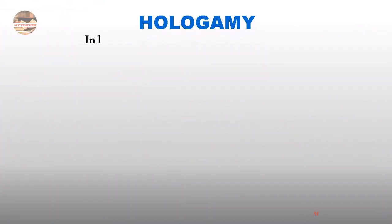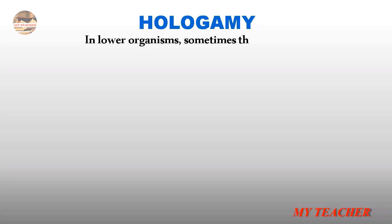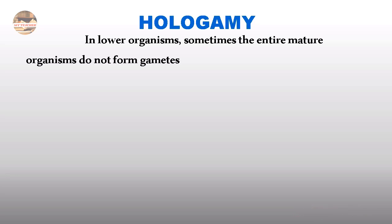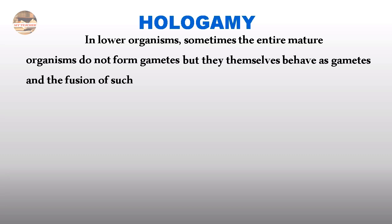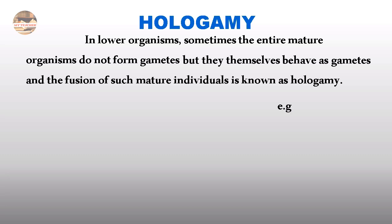Hologamy: In lower organisms, sometimes the entire mature organism does not form gametes, but they themselves behave as gametes. The fusion of such mature individuals is known as Hologamy. Example is Trichonympha.